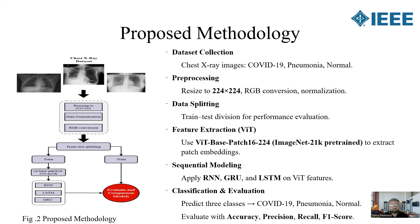Next, features were extracted using a pre-trained Vision Transformer, which divides each image into patches and learns global spatial relationships. The ViT feature embeddings were fed into RNN, GRU, and LSTM models to capture sequential dependencies among patches. Finally, a softmax classifier predicted the class label, and performance was evaluated using accuracy, precision, recall, and F1 score.